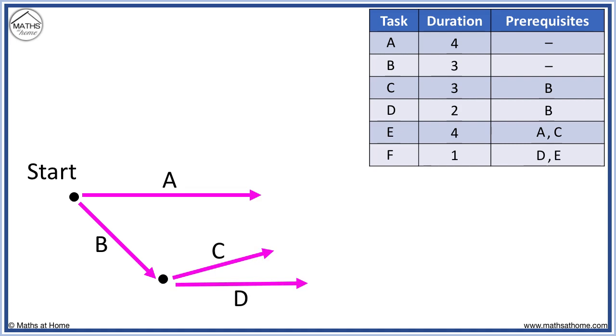Now task E has two prerequisites. It requires both task A and C. This means that the arrows for A and C must come together before task E is drawn. We can erase task C and redraw it so that it combines at a node with task A.